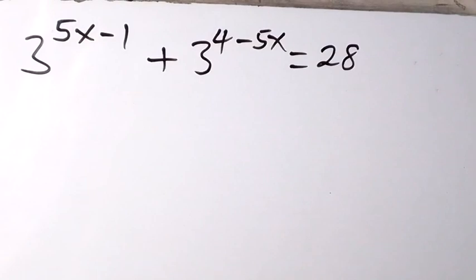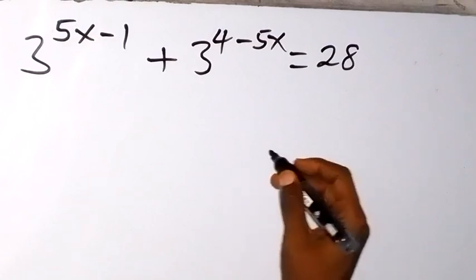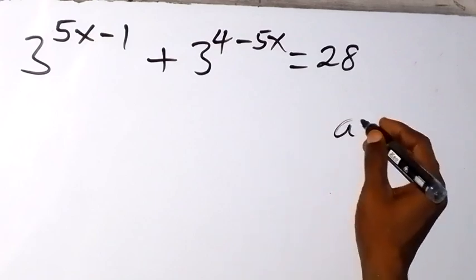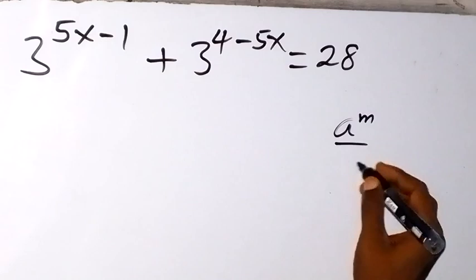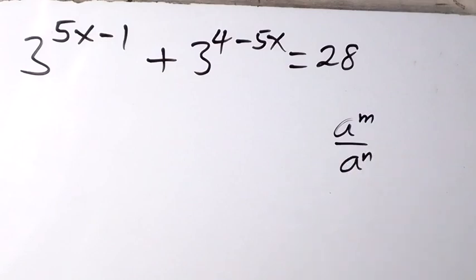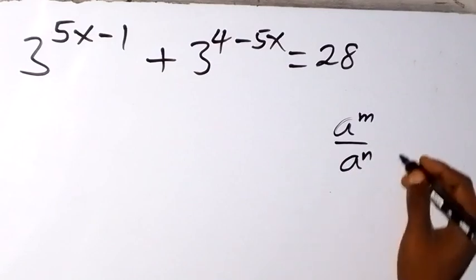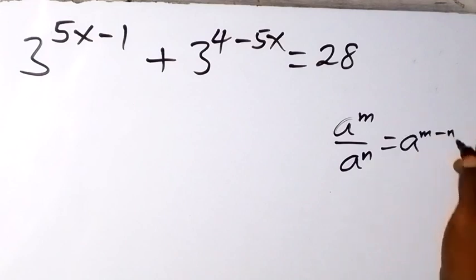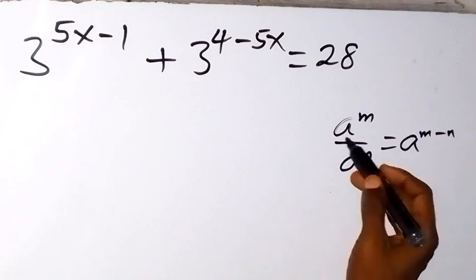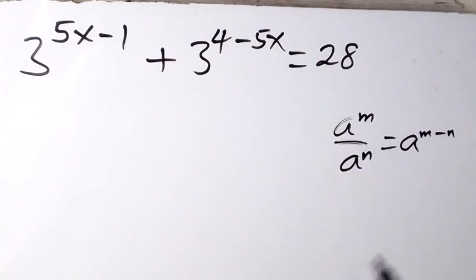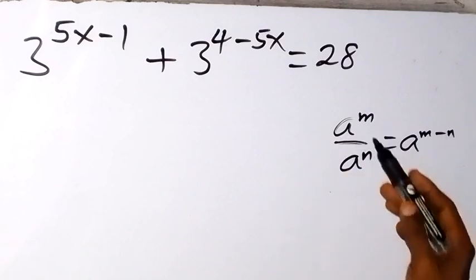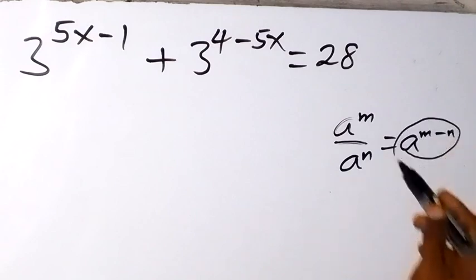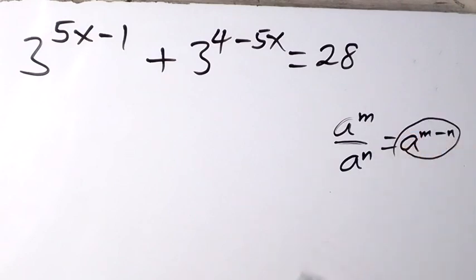From here, we can apply the law of indices: when we have a raised to the power m divided by a raised to the power n, this equals a raised to the power m minus n. That is, when we have division, we subtract the powers. So if it is written like this, we can interpret it the other way as well.